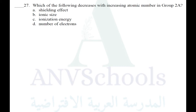Which of the following decreases with increasing atomic number in Group 2? Atomic number increases in both directions — down a group and across a period.